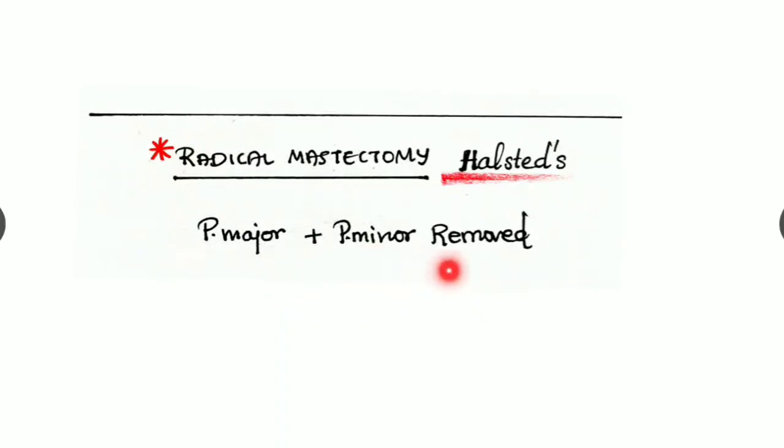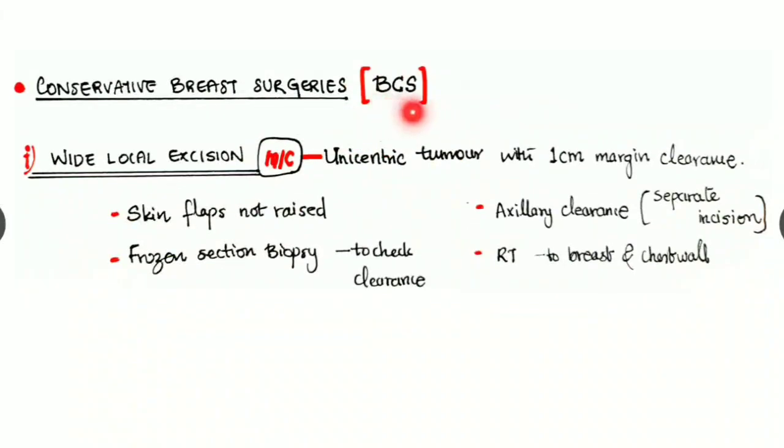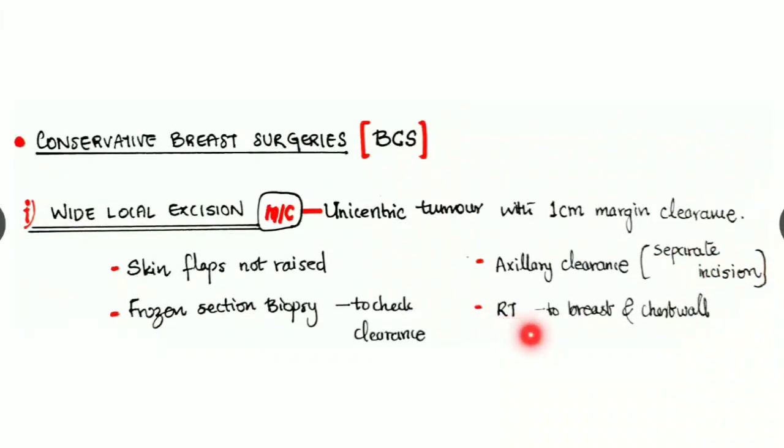Next is conservative breast surgeries, that is breast conservation surgeries. It includes wide local excision, which is the most common surgery of the breast conservation type. We are removing unicentric tumor with 1 centimeter margin clearance. Here the skin flaps are not raised, and we are taking frozen section biopsy on the table to check the margin clearance. We are doing an axillary clearance with a separate incision, and we have to give radiotherapy to the breast and the chest wall. Radiotherapy is a must in the breast conservation surgeries.